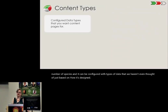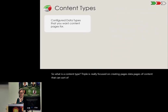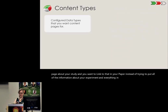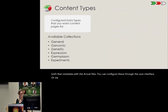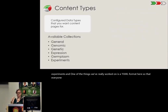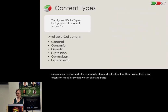So what is a content type? TRIPLE is really focused on creating data pages of content that can act as dashboards. For example, you're creating a page about your study and you want to link to that in your paper instead of trying to put all of the information about your experiment in there. It allows us to link metadata with the actual files. You can configure these through the user interface or via code. We have available collections: general, genomic, genetic, expression, germplasm experiments, and we've really worked on a YAML format so everyone can define a community standard collection hosted in their own extension modules to standardize across all of our amazing fields.